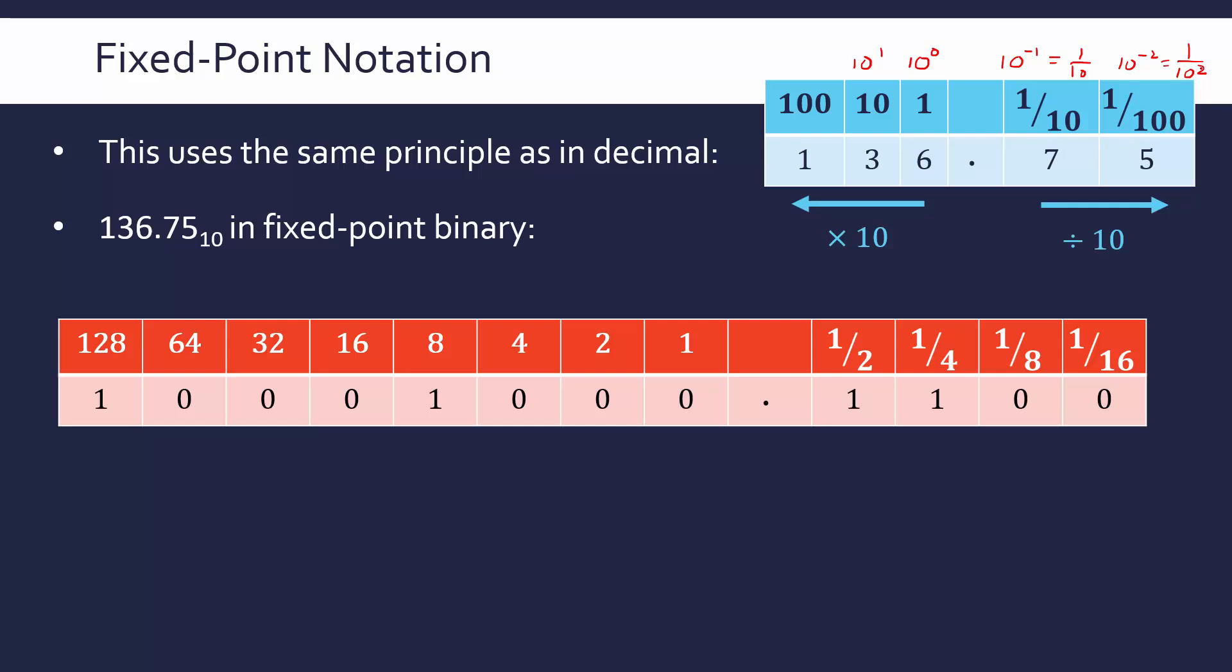So this same number, 136.75, in fixed-point binary, is this number here. So you've got my table structure at the top, but we can see the binary number at the bottom plus a point, which is now not called a decimal point. It's called a binary point. So really important. I'm sure I'll call it a decimal point by mistake at some point, but it is a binary point, also called a radix point. Sometimes radix is a more general word. Radix also means base. But now it's a binary point.